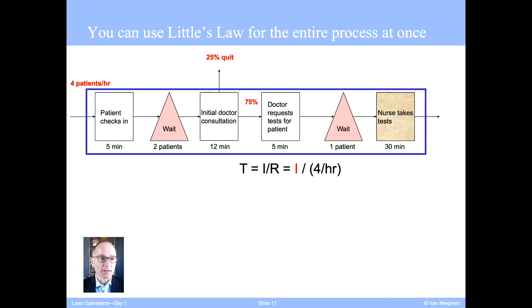Remember, the throughput now is four patients per hour. That is the average inflow rate. It also is the sum of the two outflow rates. The only thing we need to calculate now is what is the total average inventory in this process. We can do what we did before and at every step of the process apply Little's Law. Again, stop the video and maybe do this for yourself.